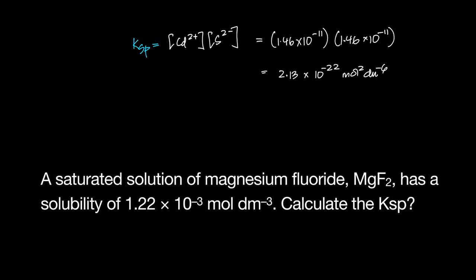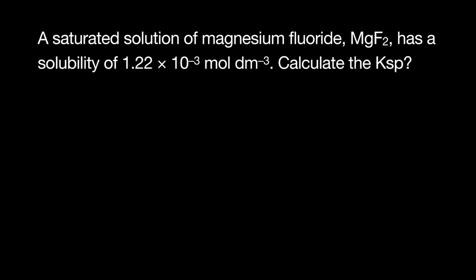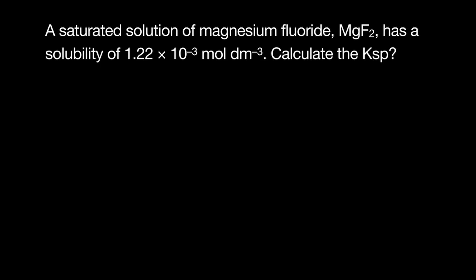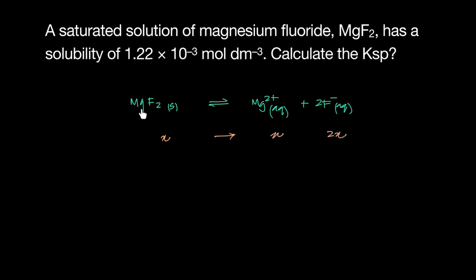Let me show an easier approach for the first question. Taking the equation — MgF₂ dissolving to give Mg²⁺ and 2F⁻ — before even looking at the value for solubility, assume X is the solubility. What that means is X amount dissolves in mol per dm³ to give concentrations in the ratio of the equation: X for Mg²⁺ and 2X for F⁻.